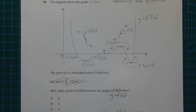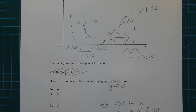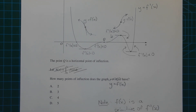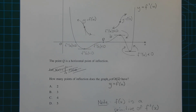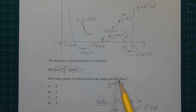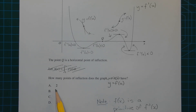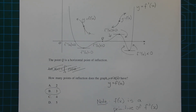Therefore there are three points of inflection on the curve y equals f of x. Going back to the wording of the original question — how many points of inflection does the graph y equals a of x have? — the correct answer is three.